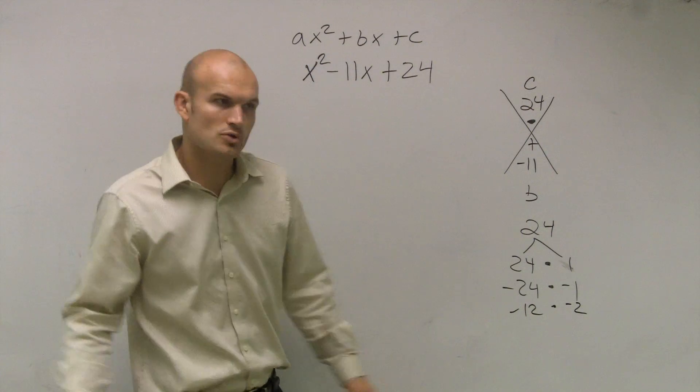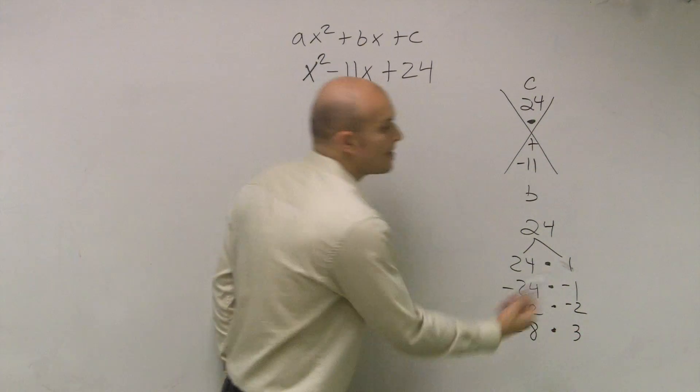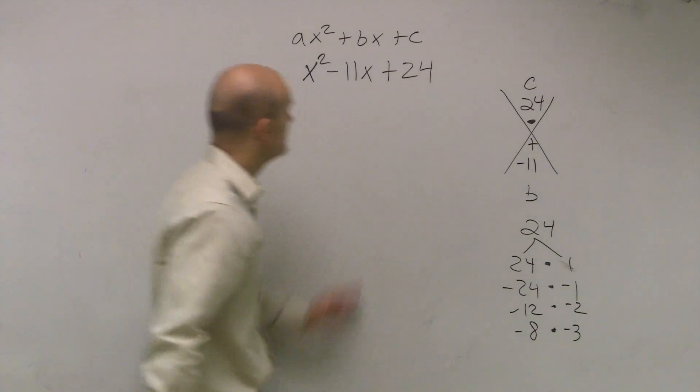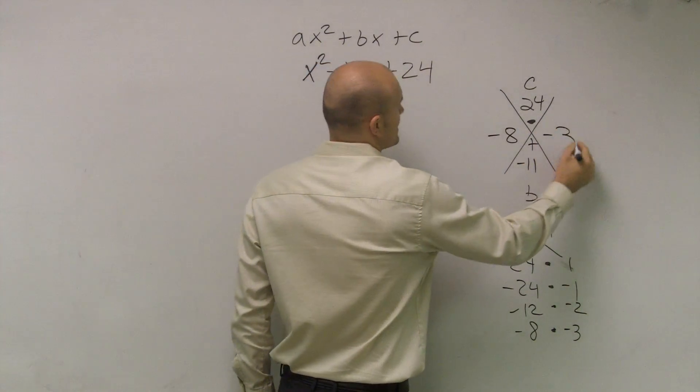Nope. Negative 8 times 3? Negative 8 plus negative 3 gives you negative 11. So all I simply do is I write negative 8 there and negative 3.